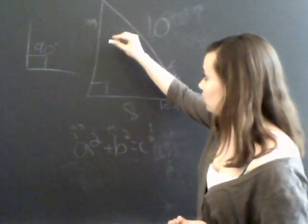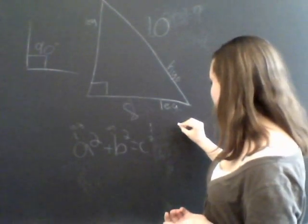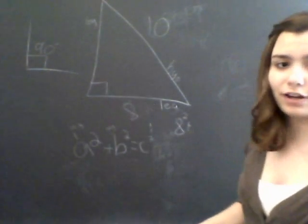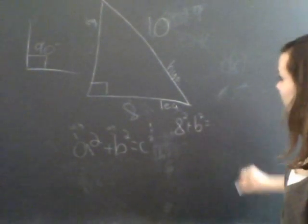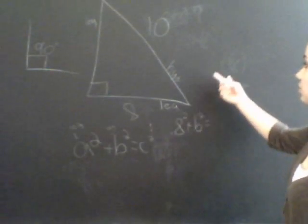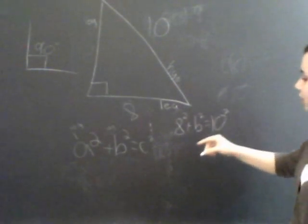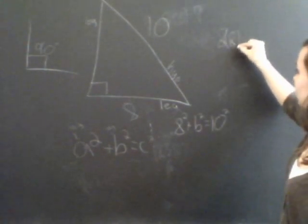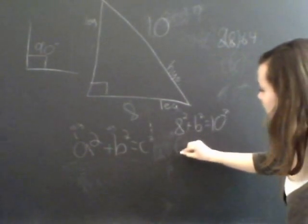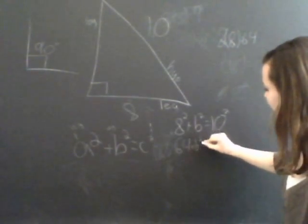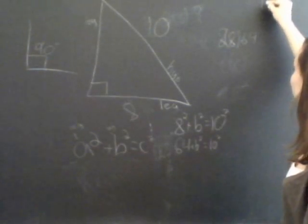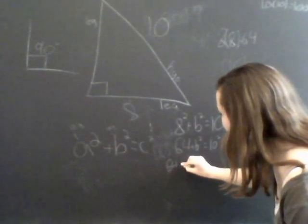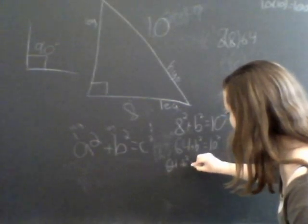Then all you have to do is just use the Pythagorean theorem again. So you do A squared, which because this leg is 8, so that's 8 squared plus, well, you don't know the other leg, so you leave it as a variable, B squared equals C, a hypotenuse, 10 squared. So 8 squared plus B squared equals 10 squared. And again, you're going to multiply 8 times 8, get 64. So 64 plus B squared equals 10 squared. And 10 squared, 10 times 10 equals 100. So 64 plus B squared equals 100.